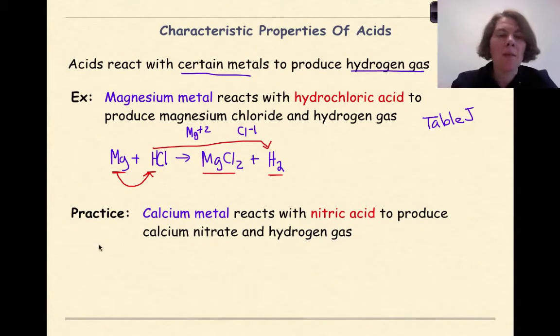Welcome back. Let's see how you did. Calcium metal can be represented as Ca. Reacts with is a plus sign. Nitric acid, according to your reference table, is HNO3. To produce is an arrow. Calcium nitrate. Now again, the key thing here that we have to be careful of is making sure that we write out the correct formula. So calcium is plus 2. Nitrate is on table E of your reference tables. So that's NO3 minus 1. We're going to cross these down. So the correct formula here is Ca(NO3)2.